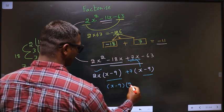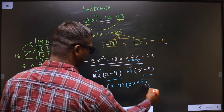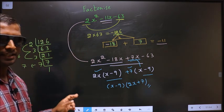Now take out x minus 9 common. So here you get 2x and here you get plus 7. This is our answer.